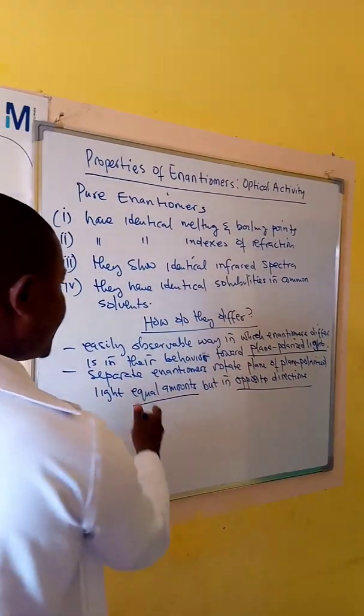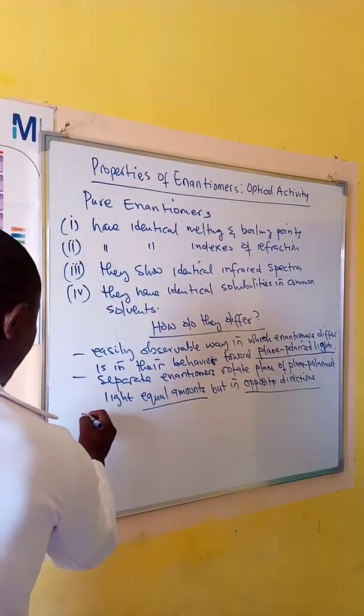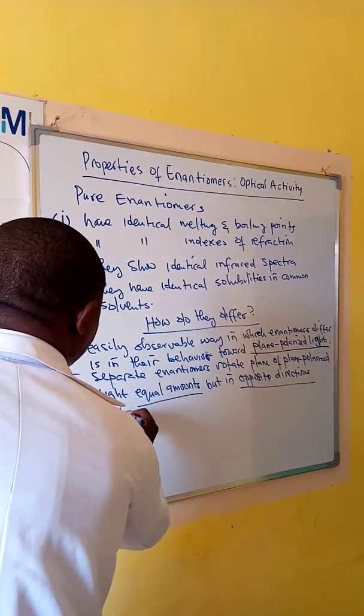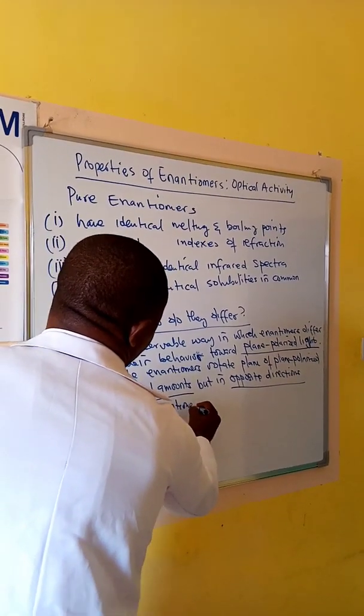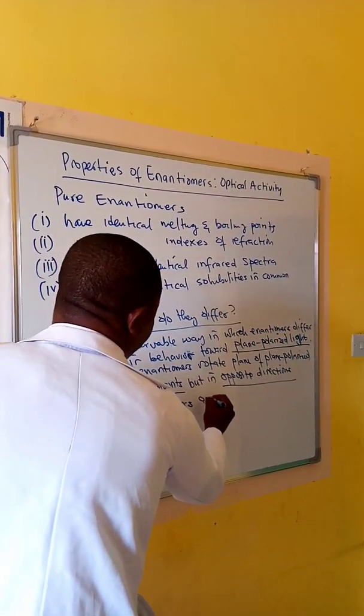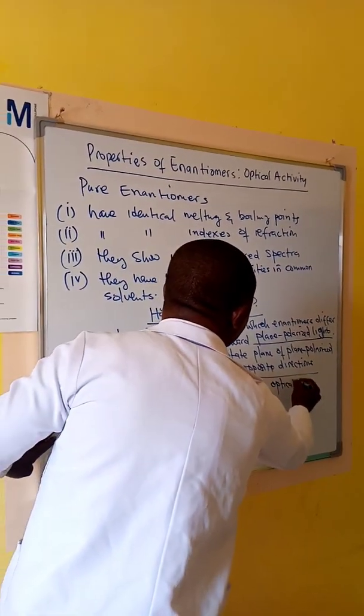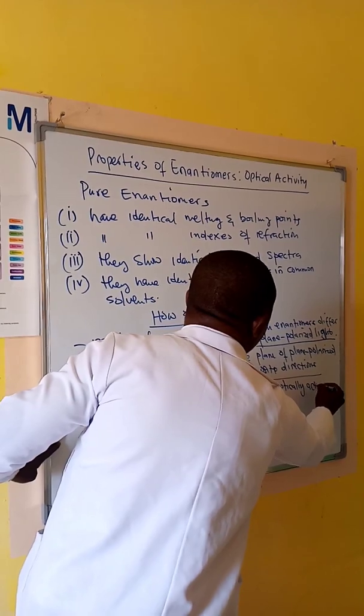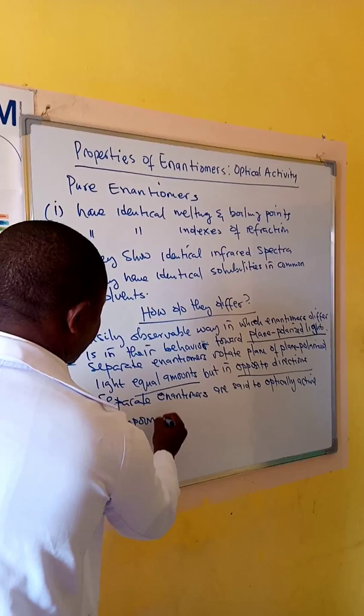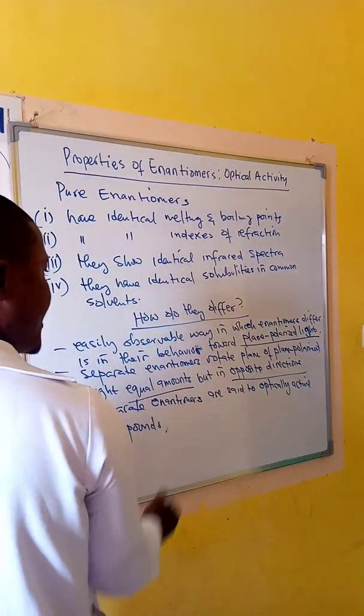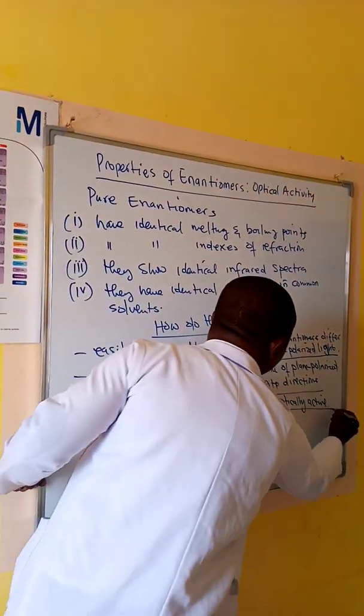They rotate the plane of plane polarized light equal amounts but in opposite directions. Separate enantiomers are said to be optically active compounds because of their behavior on plane polarized light.